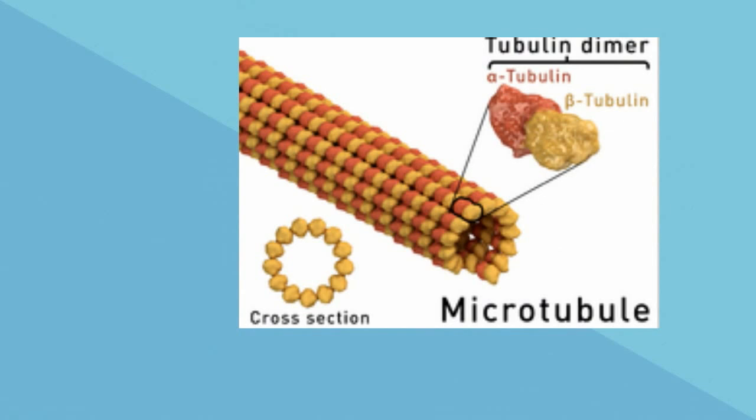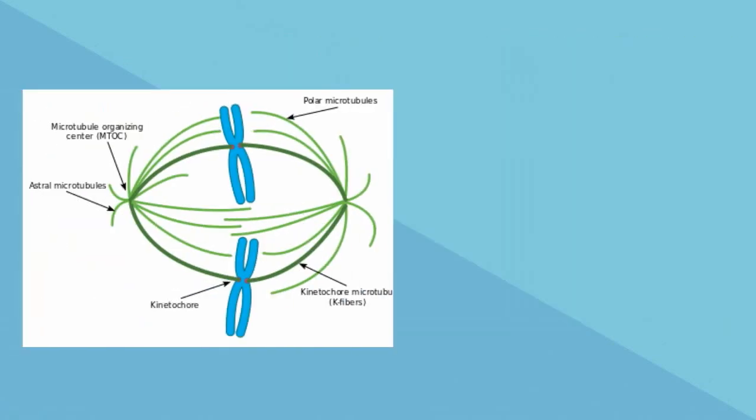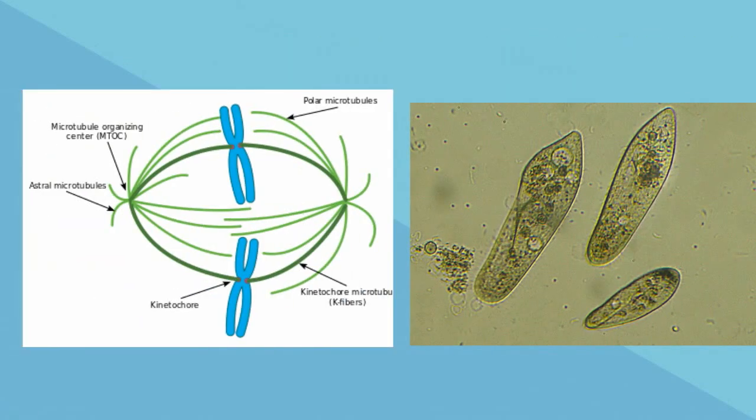The largest in diameter are the microtubules. They are involved in the mitotic division spindle fibers and the cilia and flagella of the cell.